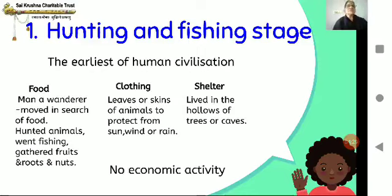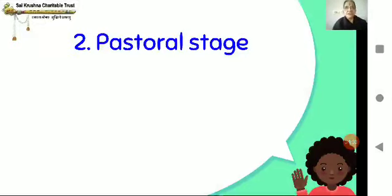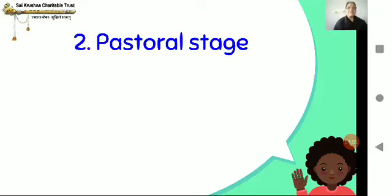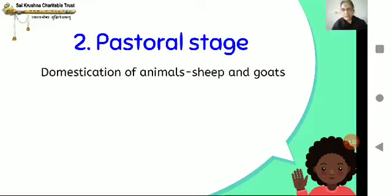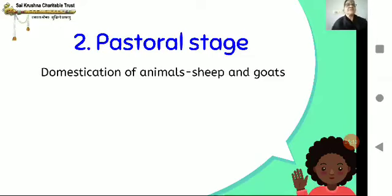The next stage was the pastoral stage. Pastoral comes from the word pasture, meaning grassland. Man started the domestication of animals — he had goats and sheep as his pets. He looked after them and took care of them. Obviously, when he takes care of them, he went in search of grass for these animals. He started looking out for pastures and grasslands so that his sheep and goats could graze.